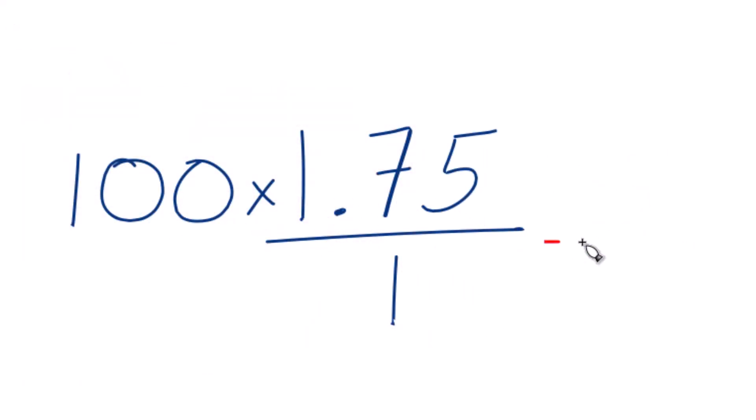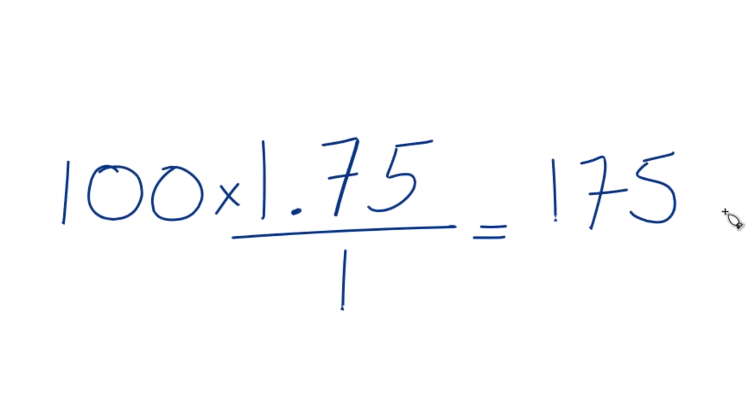So let's do that. 100 times 1.75 equals 175, and that is a whole number. So we have our whole number here.